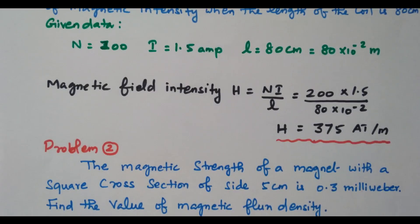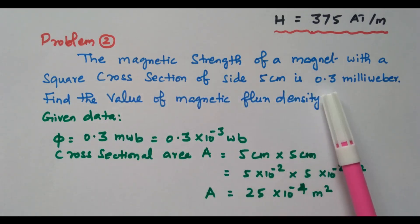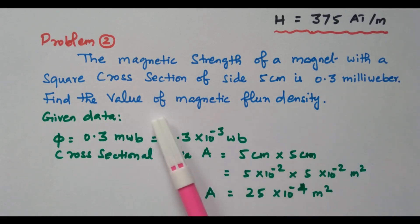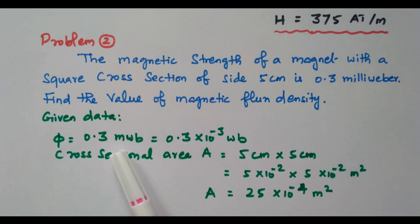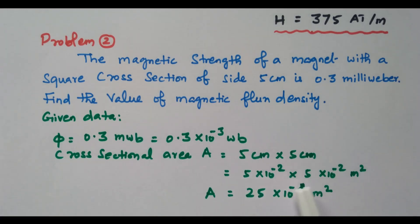Now we will go to the second problem. The magnetic strength of a magnet with a square cross-section of side 5 centimetres is 0.3 milliweber. Find the value of magnetic flux density. The flux is 0.3 milliweber, which equals 0.3 × 10⁻³ weber. The area of cross-section: side × side = 5 × 10⁻² × 5 × 10⁻² = 25 × 10⁻⁴ metre square.